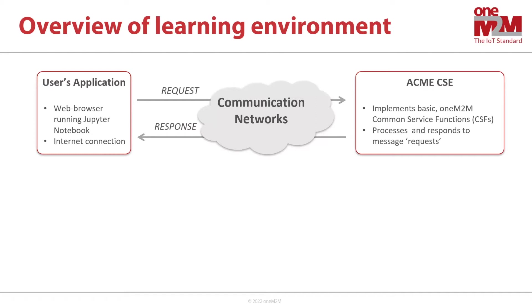So what you're showing us here is an overview of the learning environment. This is a basic configuration we will be using in all the subsequent talks. On the left is the user application, which is connected to the internet or by any other kind of network connectivity. In our case, this would be the Jupyter notebooks running in a web browser. This application has to connect to the ACME CSE, and after that the developer can exercise some basic oneM2M common service functions. In oneM2M, we use the term application entity - an entity that produces or consumes IoT data, or both. An application entity can be a sensor, a dashboard, or a decision-making application. The interactions shown here involve a request and a response procedure.